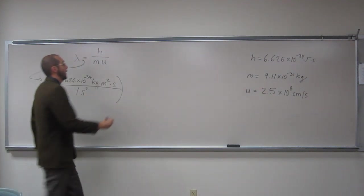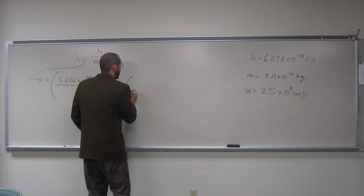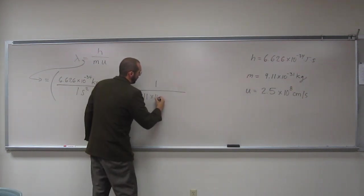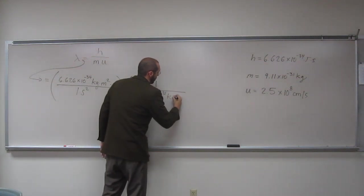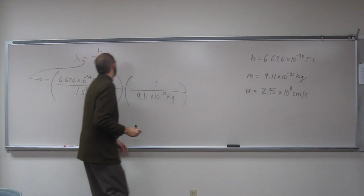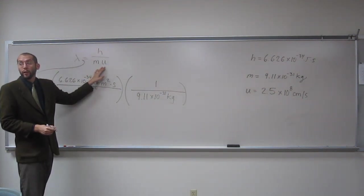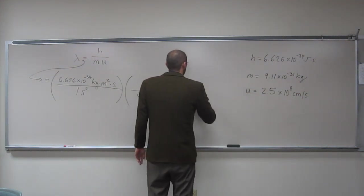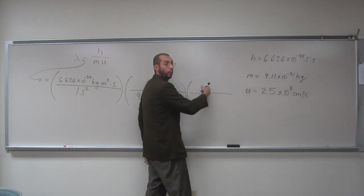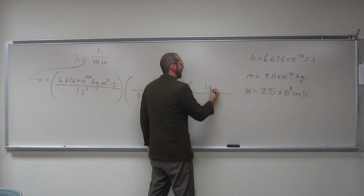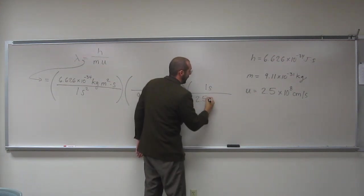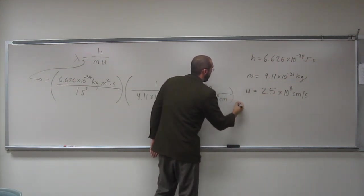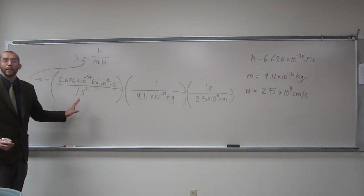Okay, so now, 1 divided by mass, right? So we've got the mass in kilograms already, so that's good. So 1 divided by 9.11 times 10 to the negative 31 kilograms. And then 1 divided by velocity, right? So that's just the inverse of what we have here. So on the top, we're going to put what? Very good. 1 second, 2.5 times 10 to the 8 centimeters on the bottom. Okay, so now let's try to cancel out stuff.